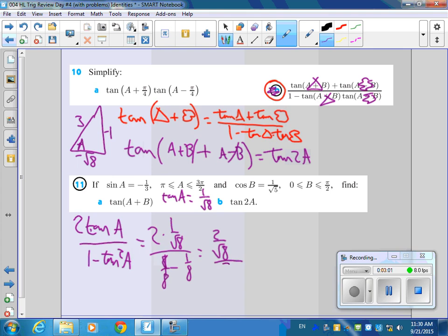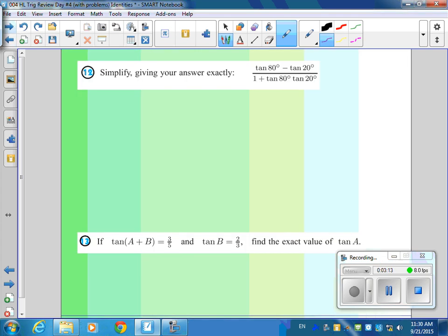So you're going to get 2 over the square root of 8 over 8 eighths minus 1 eighth is 7 eighths. So it's going to be 16 over 7 square root of 8. Is that good? Yeah, how about any others here?